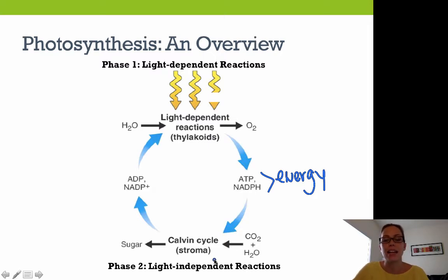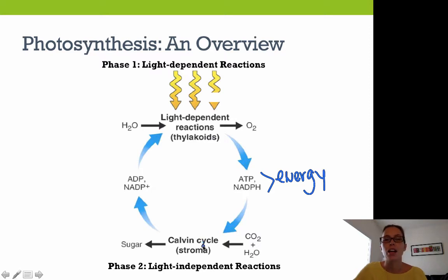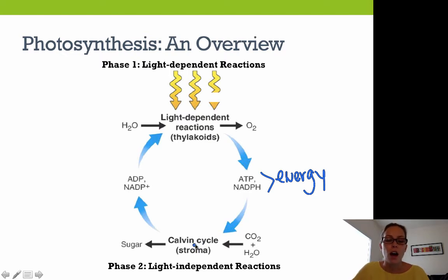The second phase is the light-independent reactions. Light energy is not used in this phase. The Calvin cycle, as it's called, takes place not only during the daytime but also at night. During the Calvin cycle, carbon dioxide plus water — taking place in the stroma — is used to produce glucose. The cycle needs energy from ATP and NADPH to power it.